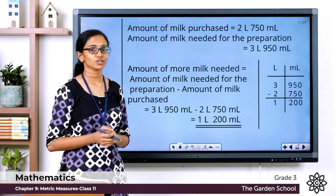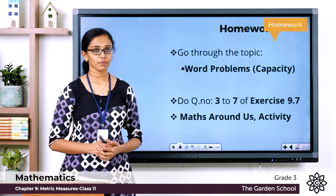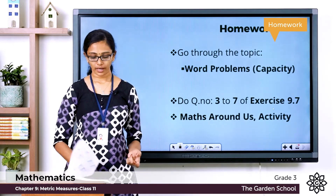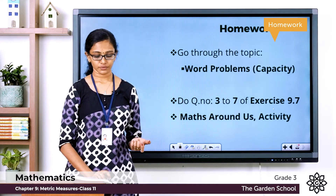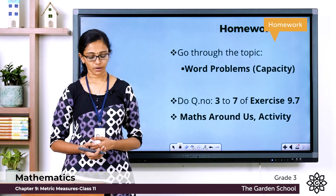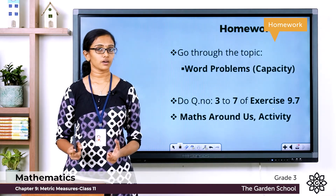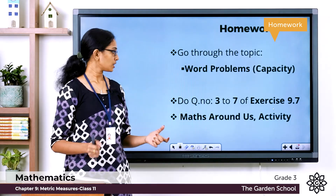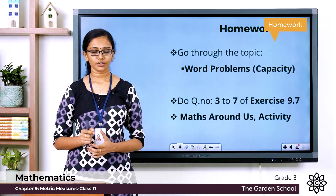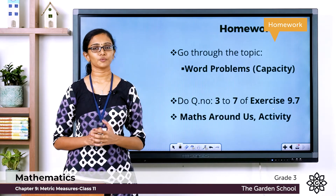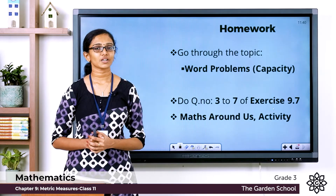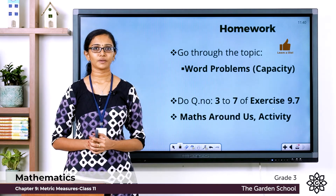I hope this is clear. Now go through the topic 'Word Problems Involving Capacities' on page 129 of your textbook, then move on to Exercise 9.7 and work out questions number 3, 4, 5, 6, and 7 in your notebook. You can also see a heading 'Match Around Us' and on page 131 an interesting activity to prepare fruit punch — go through it and do accordingly. That's all for today children, hope this was interesting. We'll meet in the next class with a new topic. Bye!